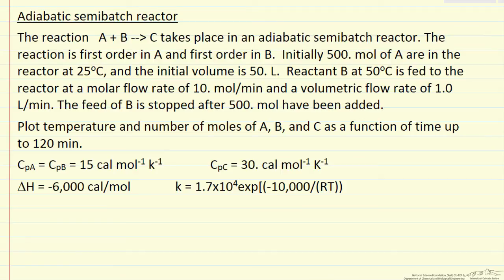In this problem we're going to look at an adiabatic semi-batch reactor in which we have a liquid phase reaction A plus B goes to C. The reaction is first order in A and first order in B. We're going to start the reactor containing only reactant A at 25 degrees C, and then we're going to add reactant B which is at 50 degrees C.